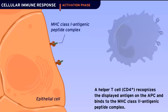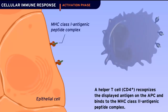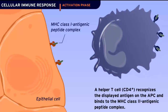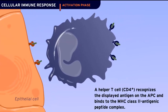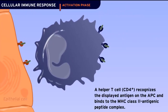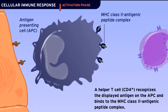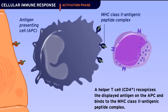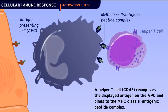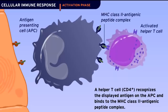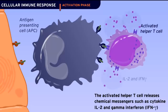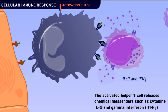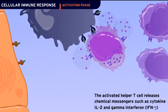A helper T cell, CD4+, recognizes the displayed antigen on the APC and binds to the MHC class II antigenic peptide complex. The activated helper T cell releases chemical messengers such as cytokine IL-2 and gamma interferon.